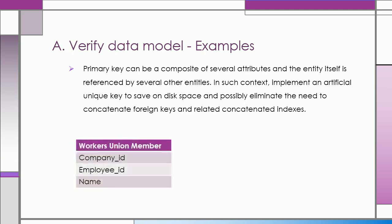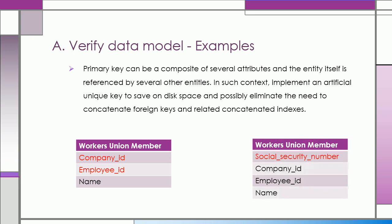For example, in a workers' union member table, primary key is composed of several attributes, which are the company ID and the employee ID. We use social security number as the artificial unique key to save on disk space and possibly eliminate the need to concatenate foreign keys.